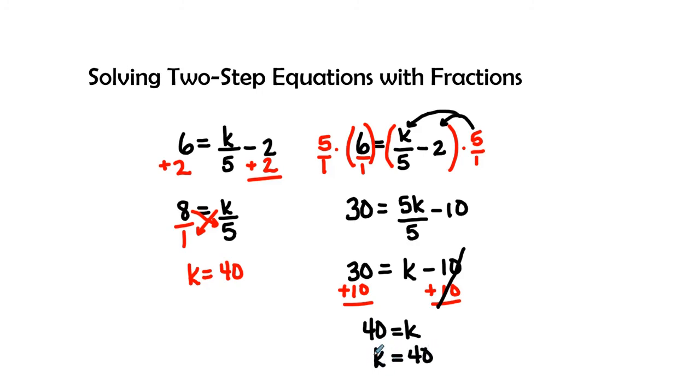Let's go back and check our work. We've done it two ways but we want to check our work just to make sure that we got 40 as the correct answer. So I have 6 equals 40 divided by 5 minus 2. We have 6 right here and 40 divided by 5 is 8, and 8 minus 2 is 6. We got it correct, so that is the right answer.